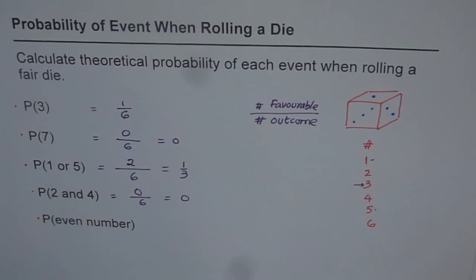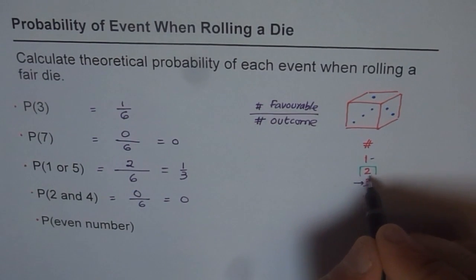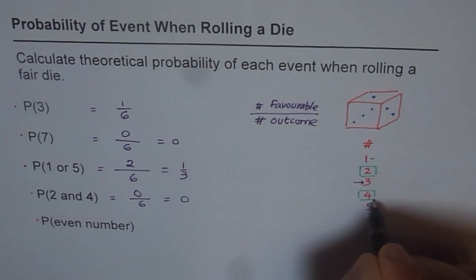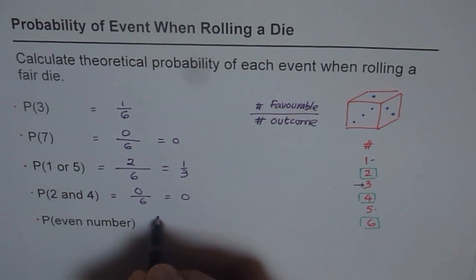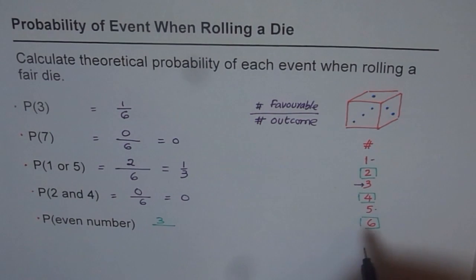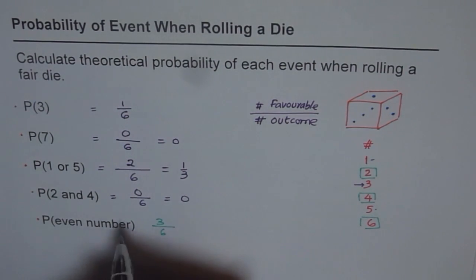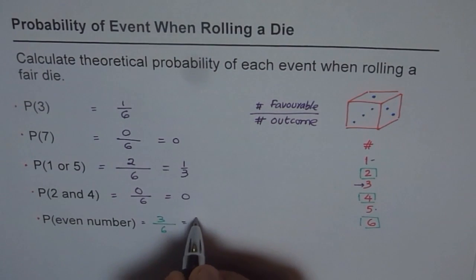Now, the last one is probability of rolling even numbers. How many even numbers do we have here? Let's figure that out. Number of even numbers are 2, 4 and 6. So these are the even numbers. 2, 4 and 6. There are 3 even numbers here. So the possibility is 3 out of 6. So that is our answer for rolling an even number. So we can simplify this and write this as equals to half.